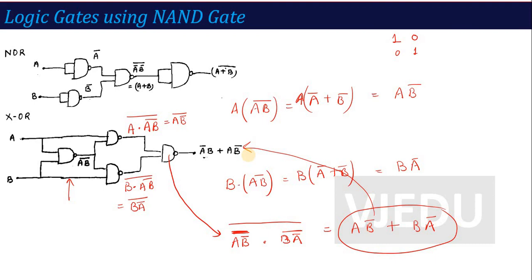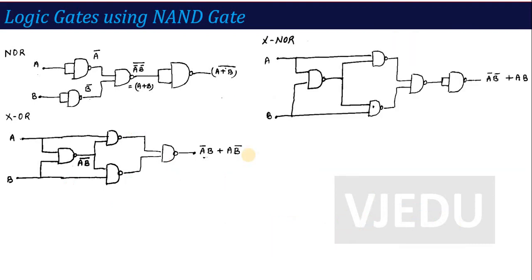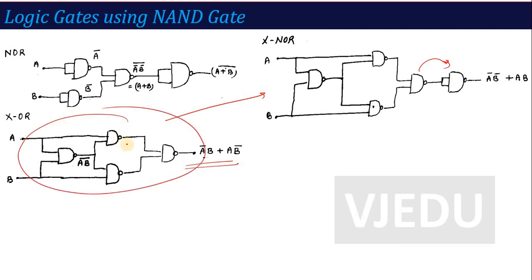Similarly, XNOR from NAND: XOR is realized with four NAND gates, and XNOR is the complement of XOR. So add one more NAND gate (as inverter) after the XOR circuit to get XNOR. This is also a common exam question: draw XNOR gate using NAND gates.